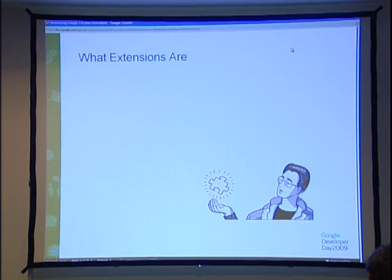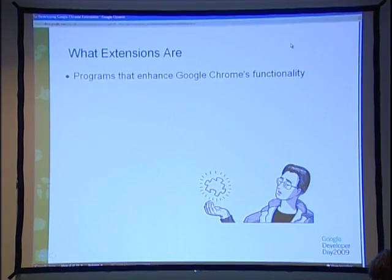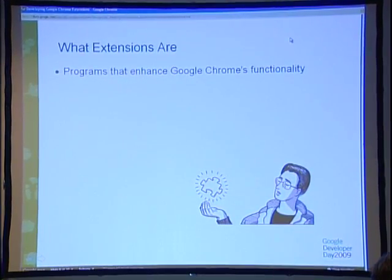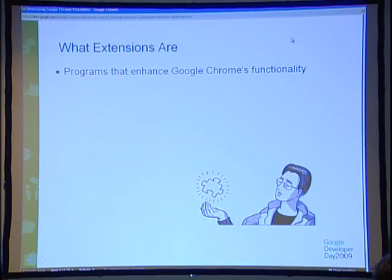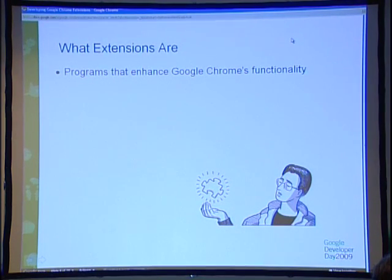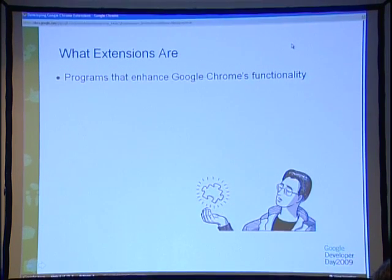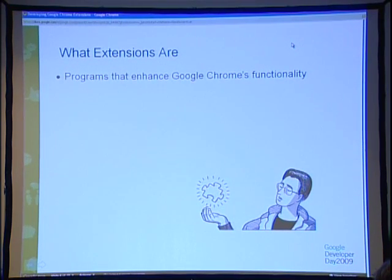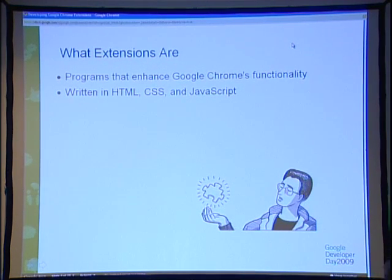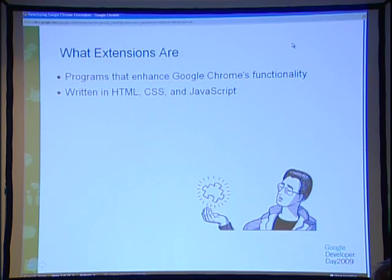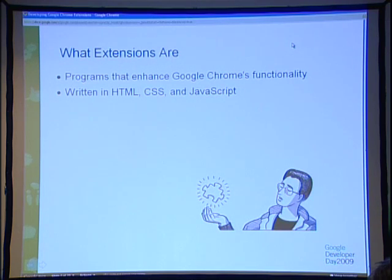So what are Chrome extensions? Well, you already know what browser extensions are. They're programs, usually small ones, that modify the behavior of the browser and add bits of functionality to it. And Chrome extensions are just that for the Google Chrome browser. There are a bunch of unique things about Chrome extensions though. One really important thing is that they're written entirely with standard web technologies — HTML, CSS, JavaScript, and so on. So if you know how to create web pages, you already know most of what you need to know to create Chrome extensions.